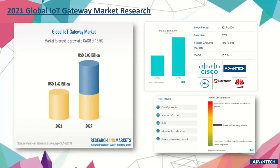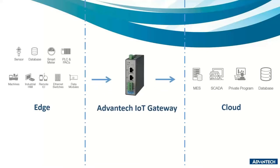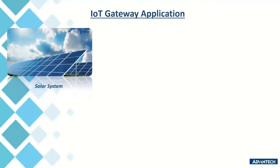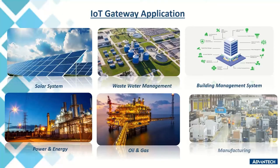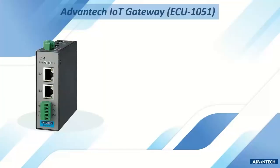Based on studies from 2019 to 2027, Advantech is glad to be one of the players in the IoT gateway market, serving second place among major players. Advantech's intelligent IoT gateway serves as a bridge among devices and the cloud, helping to collect data from sensors, databases, smart meters, PLCs, machines, HMI, I/O modules, switches, and data modules, pushing data to either private or public clouds. It is suitable for solar systems, wastewater management, building management, power and energy, oil and gas, and manufacturing plants.